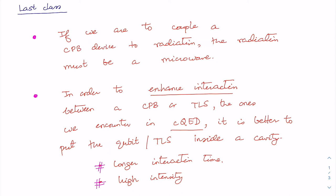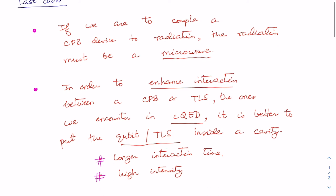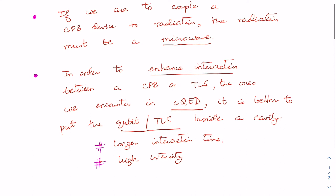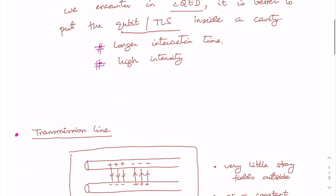We saw that if we are to couple a Cooper pair box device to radiation, the radiation must be a microwave. In order to enhance interaction between a Cooper pair box or two-level system — the kind encountered in circuit quantum electrodynamics — it is better to put the qubit inside a cavity. This ensures long interaction time and high intensity of radiation inside the cavity, and we can have a microwave cavity using the so-called transmission line.